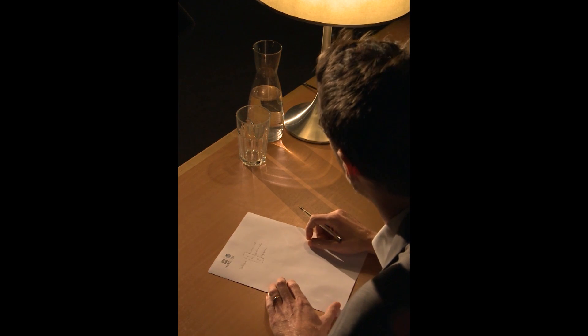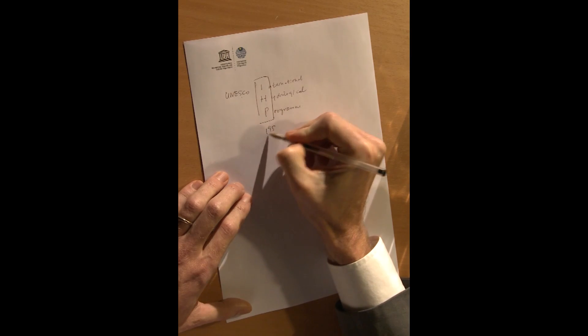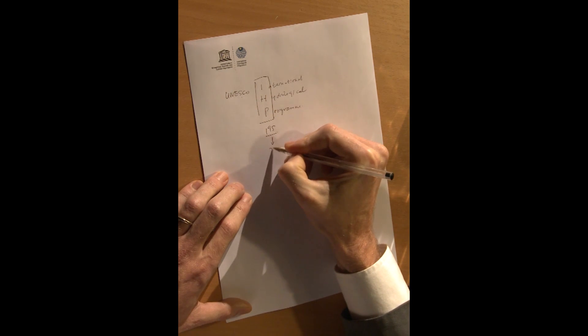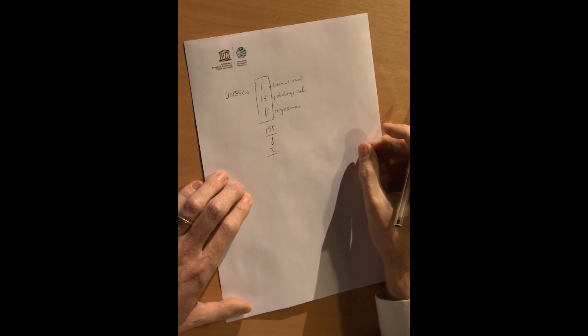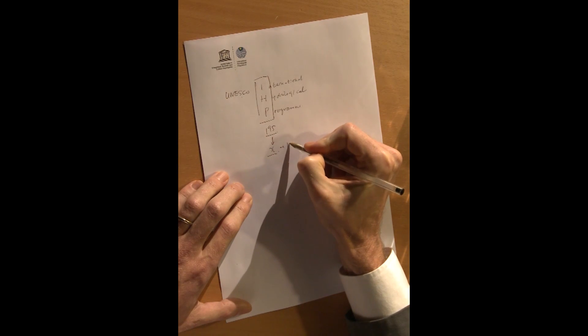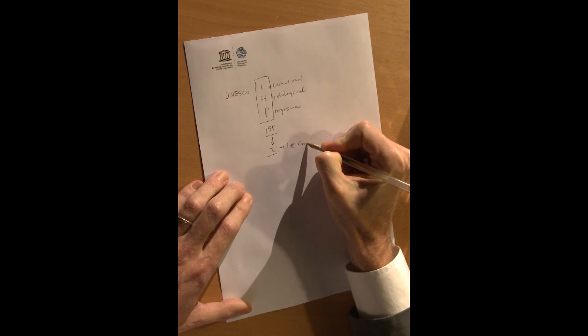To understand how it works, you need to know that UNESCO is a member state organization of 195 member states. And 36 of these member states form UNESCO's water governing body, called the IHP Council.